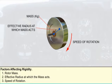To increase the rigidity of air-driven gyros, the rotor is manufactured from brass, and to increase the effective radius at which the mass acts, the brass is concentrated around the rim of the rotor. Finally, the higher the rotational speed of the gyro, the greater its rigidity in space.